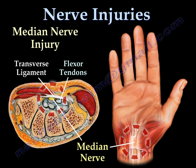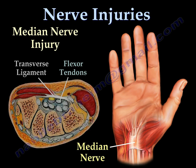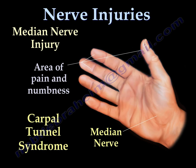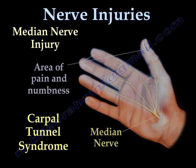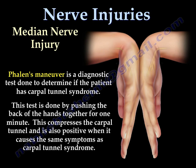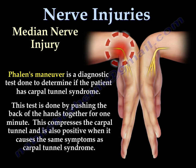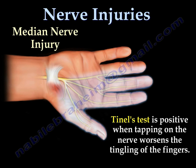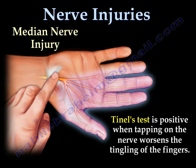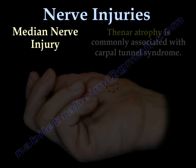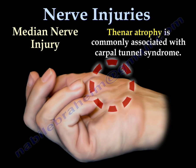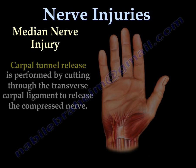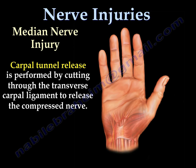Median nerve injury usually occurs with carpal tunnel syndrome. The patient will have numbness of the fingers. The Phalen's test will be positive. The nail test is also positive. With thenar atrophy, the patient usually requires carpal tunnel release.